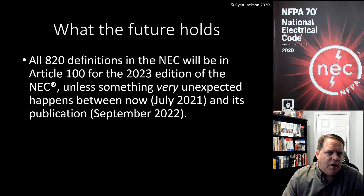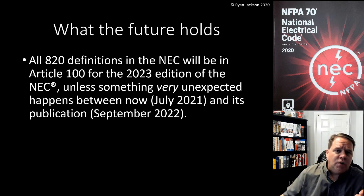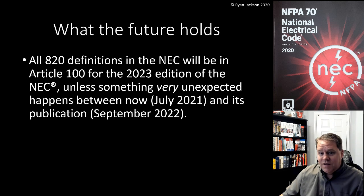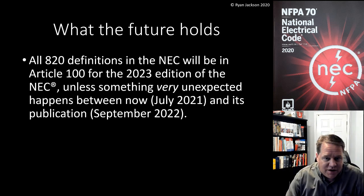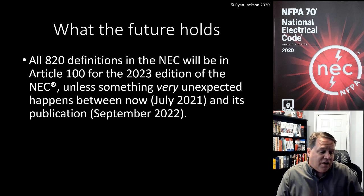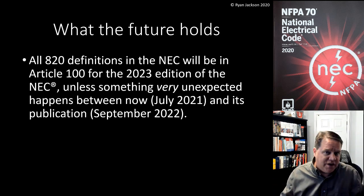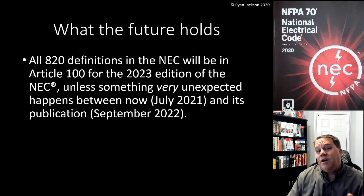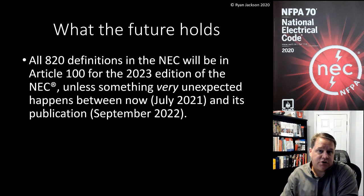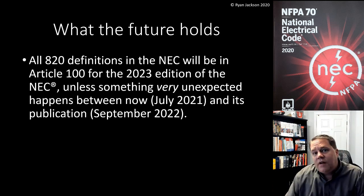I have mixed feelings about that — I don't know if it makes the code more or less user-friendly, and there are good arguments on both sides. In the 2023 version of the code, all 820 definitions — and yes, there are 820 definitions — will all be in Article 100, unless something very unexpected happens. Because it's in the style manual, which has been accepted by the Standards Council, I think this ship has sailed. Article 100 in 2023 will not have any parts; it'll just be A through Z definitions with no above-1,000-volt section and no Part three for hazardous locations.